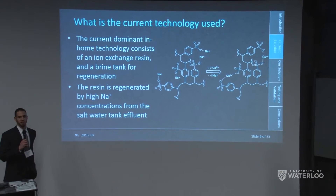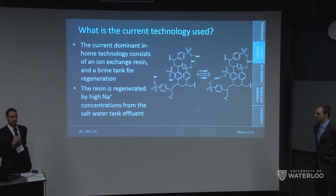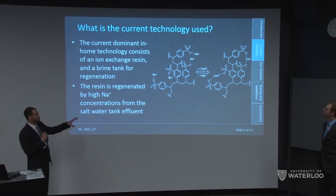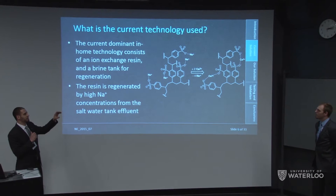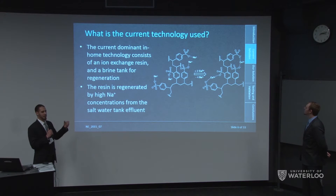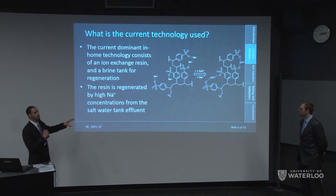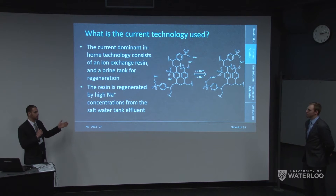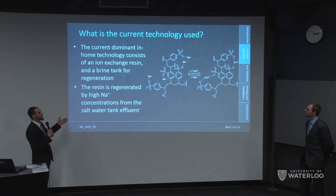Ion exchange is the predominant method used for water softening. In-home and commercial water softening is usually done through strong acid cation ion exchange. In this process, large molecules with sulfonate-containing functional groups are able to house sodium ions, which undergo exchange with calcium in solution. For every calcium ion bound, two sodium ions are released. To regenerate the resin after use, you flush the system with high-concentration brine — sodium chloride solution — and the process reverses: the captured calcium is released and your sodium is regenerated.